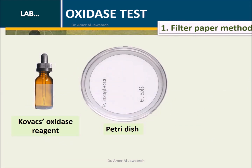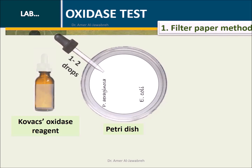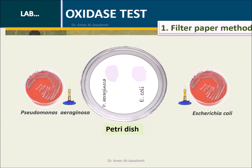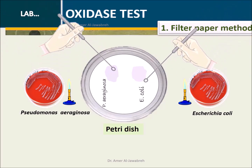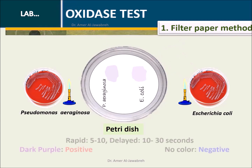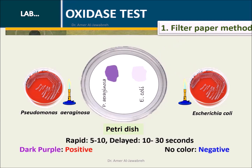Method 1 — Filter paper method: Add 1 to 2 drops of fresh Kovacs oxidase reagent onto a Whatman number 1 filter paper and allow to soak. Pick a few isolated colonies from the plate with a plastic or platinum loop or wooden applicator and smear over the moist area. A positive reaction is indicated by an intense deep blue color within 5 to 10 seconds. A delayed positive reaction is indicated by coloration in 10 to 30 seconds. Absence of color indicates a negative reaction after 30 seconds.